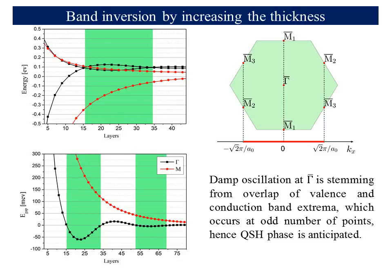Since the band inversion occurs an odd number of times — once at the gamma-bar point — a topological insulator phase is anticipated. By the same token, a topological insulator phase is plausible for tin selenide. However, in this case, the band inversion takes place at 3 M-bar points.